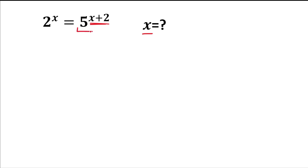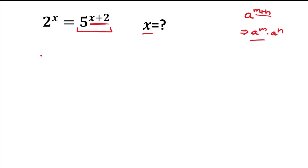For solving this, first of all we'll split this power value. It is in the form of a raised to the power m plus n. Since the powers are in addition, we can split this and write it as a^m multiplied by a^n.